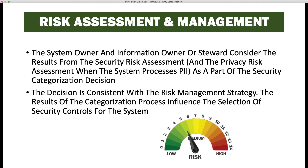The system owner and information owner or steward consider the results from the security assessment and the privacy risk assessment when the system processes PII, or personally identifiable information, as part of the security categorization decision. The decision is consistent with the risk management strategy. The results of the categorization process influence the selection of security controls for the system — the final categorization defines which controls we start with before tailoring those control sets.